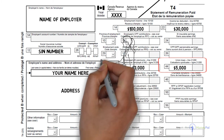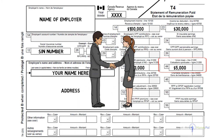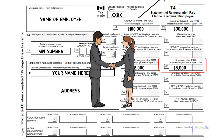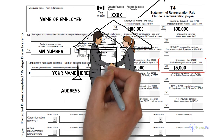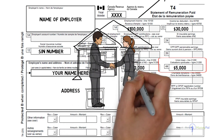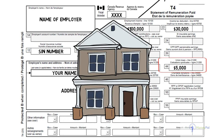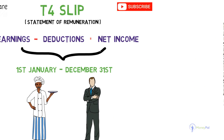This T4 acts as an income confirmation that you worked with your employer in 2020 and represents the amount of deductions and money received. They may ask you for your T4 copy when you file for your taxes, for employment insurance claims, applying for a mortgage, and so on.